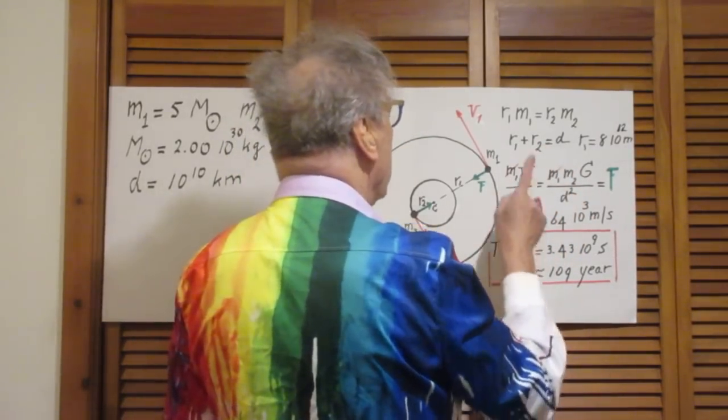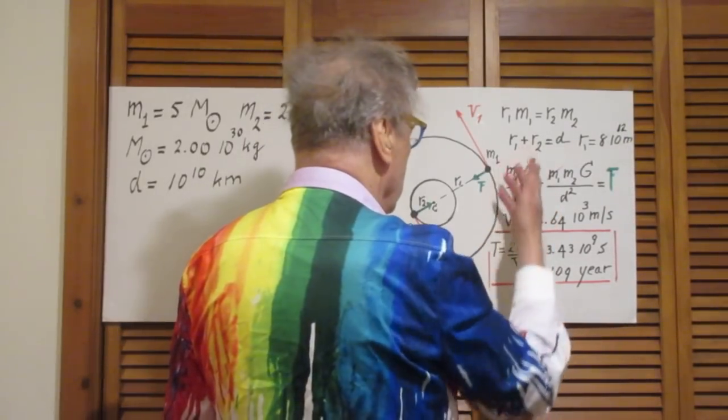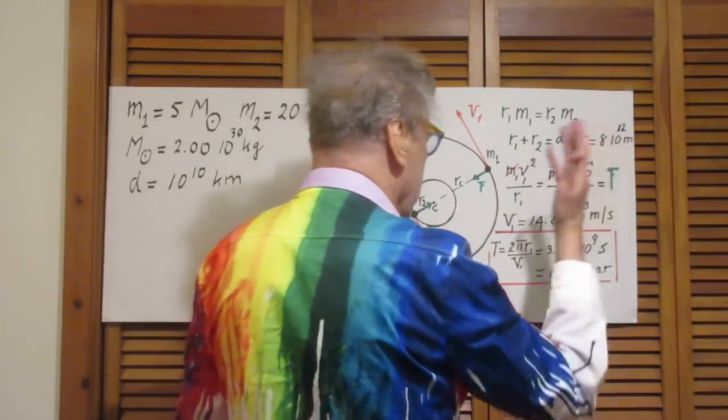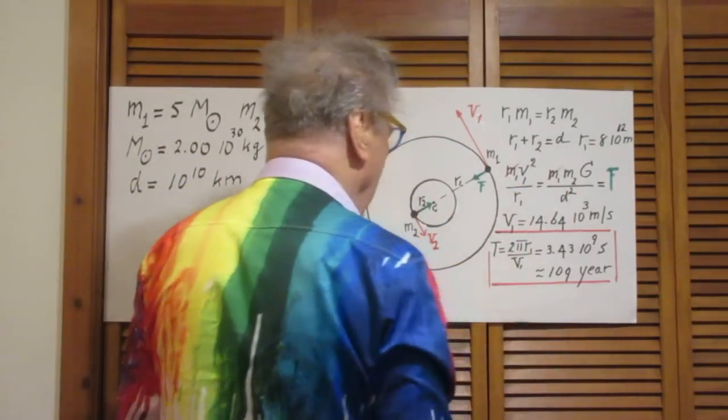You could have put in here m2 v2 squared divided by r2. Same thing. You would have found the same result. I work with m1.